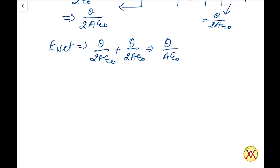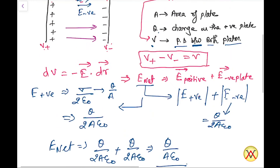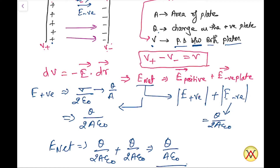Now we use the formula dV equals minus E vector dot dR vector. The electric field goes from the positive plate to the negative plate of the capacitor, so the positive plate is at higher potential and the negative plate is at lower potential. V positive is higher and V negative is lower. Also, the electric field is constant throughout the capacitor.